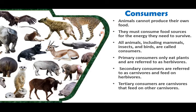Now we shall see the consumers. Consumers are the second component of the biotic component. Consumers are organisms that cannot synthesize their own food but depend on others for food. All animals, including mammals, insects, birds, and reptiles, are called consumers. Consumers are divided into three types: primary consumers, who only eat plants and are called herbivores; secondary consumers, who eat both plants and animals and are omnivores, herbivores, or carnivores; and tertiary consumers, who feed on all other animals and are purely carnivorous.